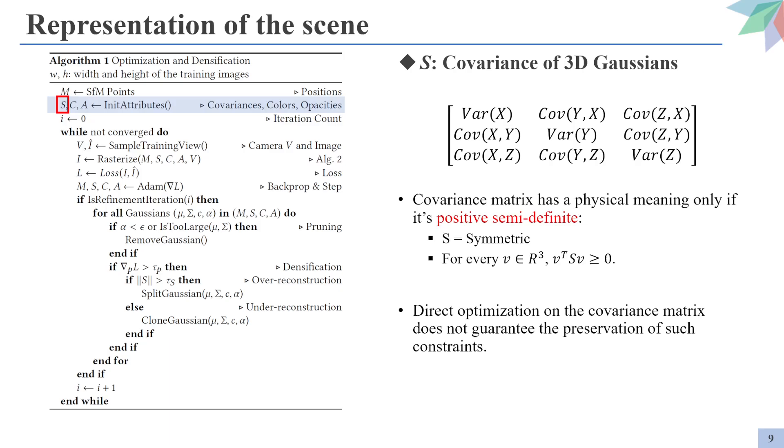The matrix on the top is the covariance matrix for a 3D Gaussians, but there is one problem with this approach. The covariance matrix is only valid if it is positive semi-definite, which means that it is symmetric and for an arbitrary real vector v, v transposed multiplied by the matrix multiplied by v should always be non-negative. But directly applying the optimization process will likely violate such constraints, so we need a workaround to this problem.